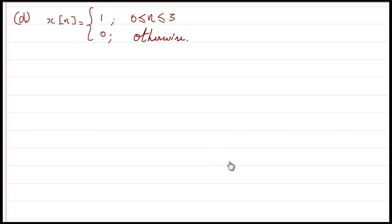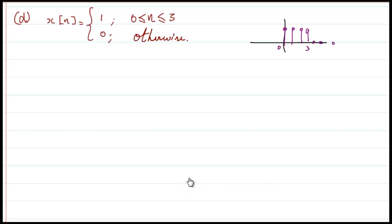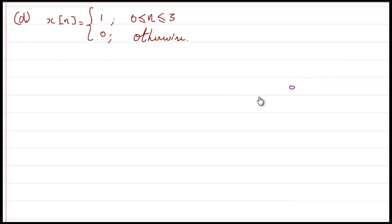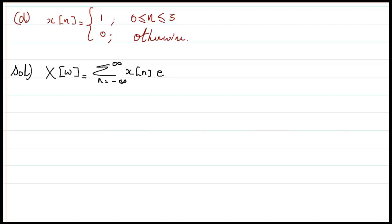The next problem: x(n) = 1 for n between 0 and 3, zero otherwise. If drawn, this looks like a rectangular pulse starting from 0 to 3 with value 1. We have already seen the rectangular pulse, but previously it was centered at 0; here it is off-center. Using the DTFT equation with n = 0 to 3 and x(n) = 1, we write X(ω) = Σ (n=0 to 3) e^(−jωn).